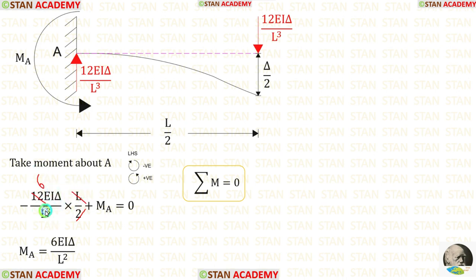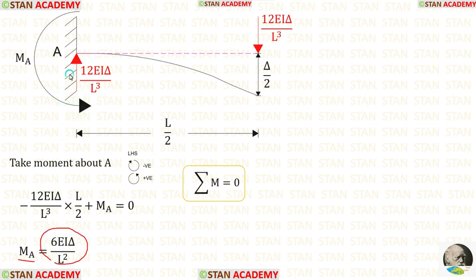Also, we can eliminate L — here it will be square. Finally, for MA, we are getting 6EI·delta/L². We got a positive value. That means MA is acting in the anticlockwise direction. Our assumption is correct.